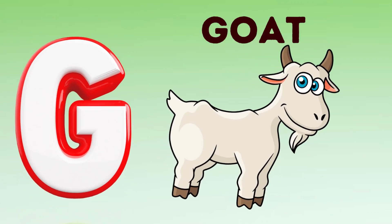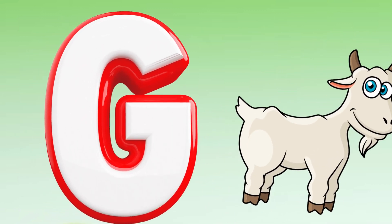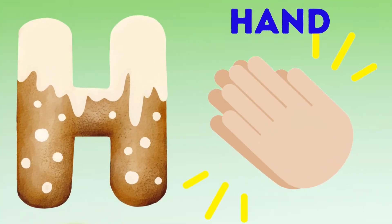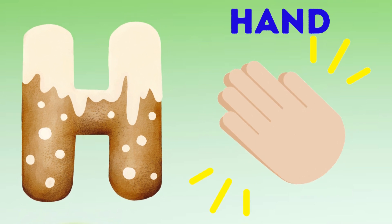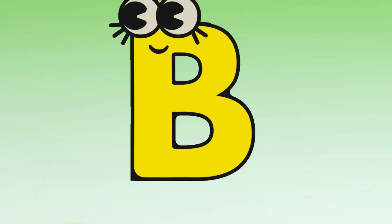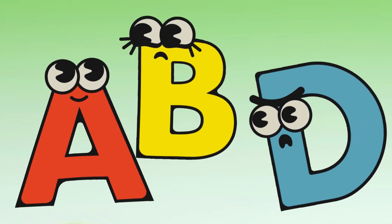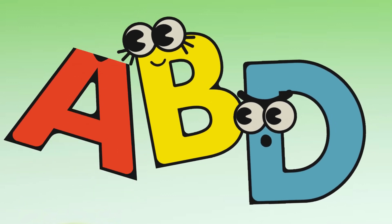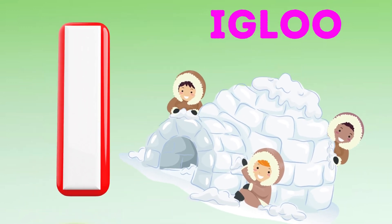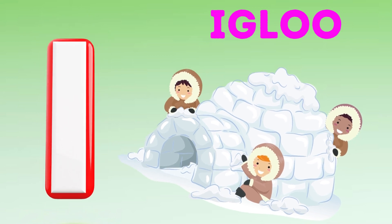G is for goat, g-g-goat. H is for hand, h-h-hand. I is for igloo, i-i-igloo.